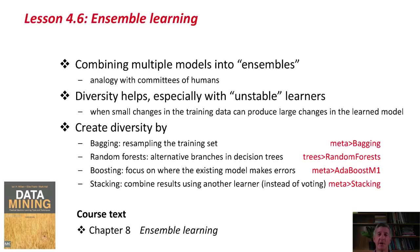To summarize, ensemble learning combines multiple models, analogous to committees of humans. Diversity helps, especially when learners are unstable. In bagging, diversity comes from resampling the training set. In random forests, diversity comes from choosing alternative branches in decision trees. In boosting, diversity comes from focusing on where existing models make errors. In stacking, results from different learners are combined using another learner instead of voting. There's a chapter in the course text on ensemble learning, and an activity to complete before the next class on putting it all together.